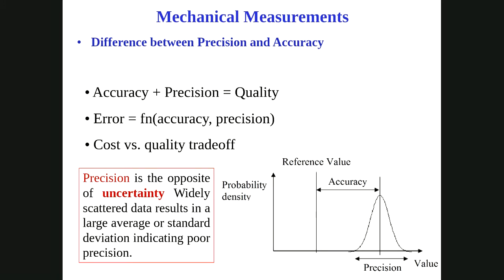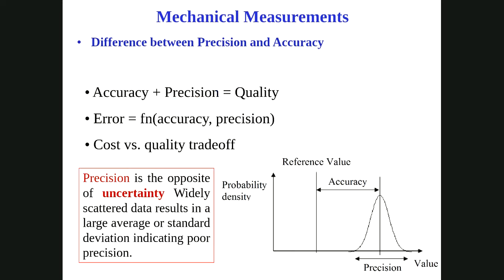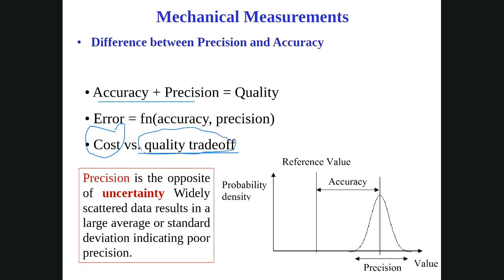Accuracy plus precision together give us quality. To achieve quality control, we need to ensure both accuracy and precision. If there is low accuracy or low precision, there is error in the system. Achieving high accuracy and precision requires more investment — for example, a Lamborghini or Mercedes is more expensive than a Toyota or Suzuki because they have higher quality products. You are paying for the quality, and increasing quality increases cost.